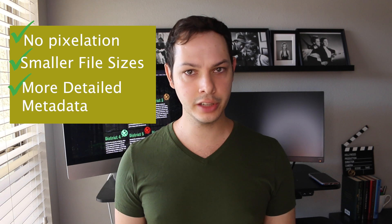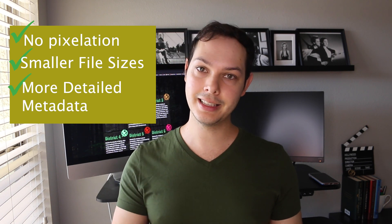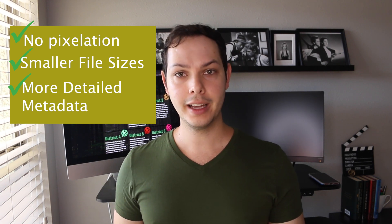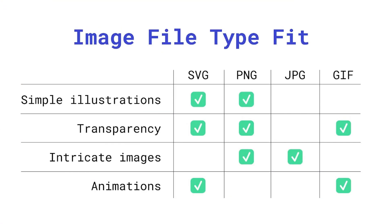SVGs actually have more detailed information about how they're constructed behind the scenes, so for screen readers and things that need access to that data, it helps a little more than a normal image. Now SVGs won't always be the go-to. Sometimes you might need a normal JPEG or PNG, and there's actually a chart from Webflow themselves that highlights the different use cases. SVGs are better for simple graphics or solid colors, while for something more detailed like a photo, a PNG or JPEG will be better.